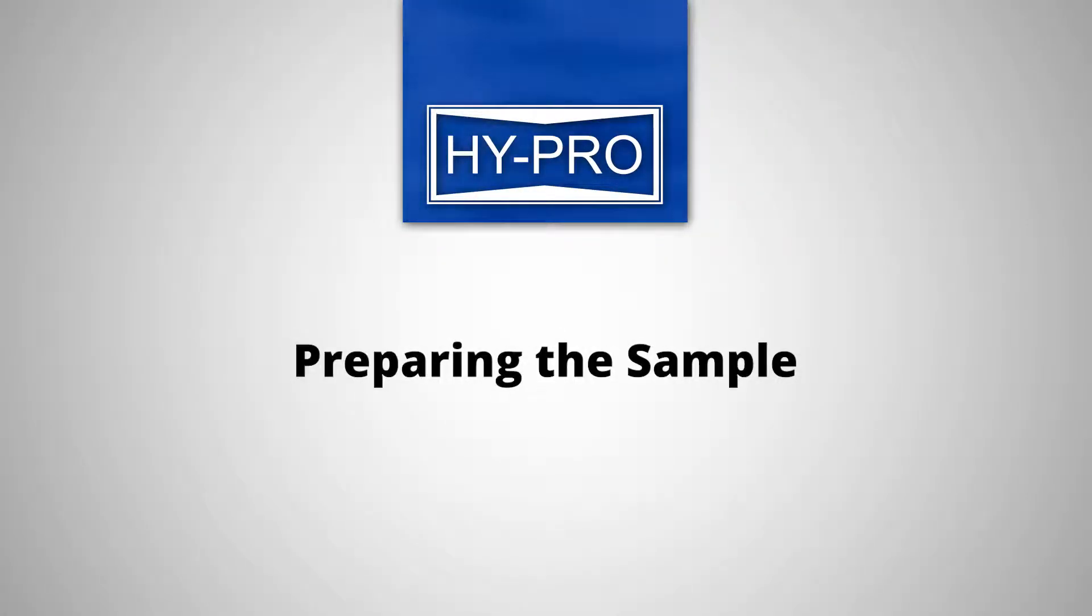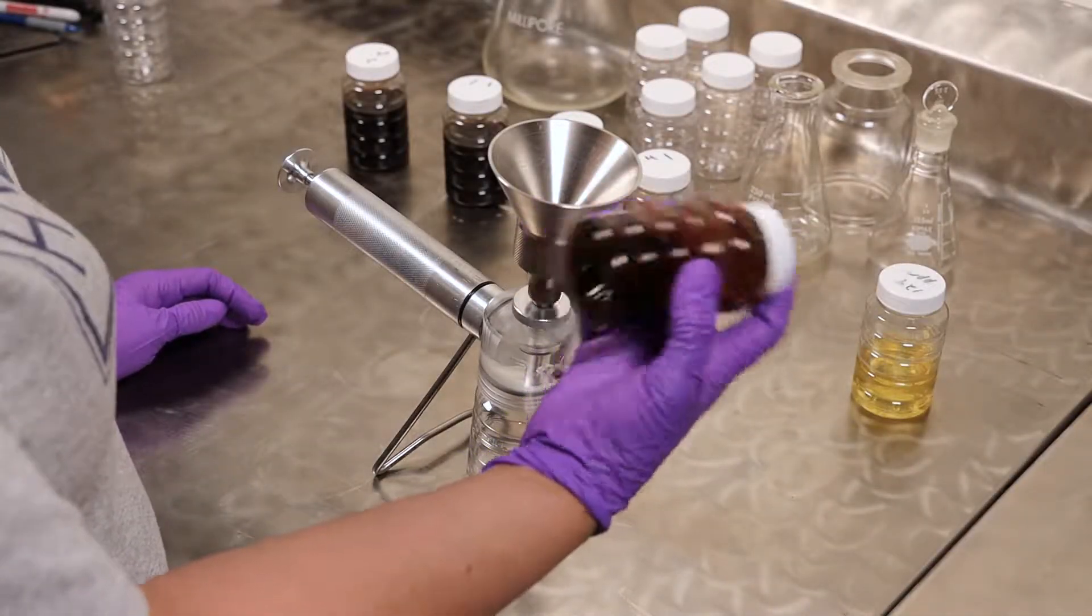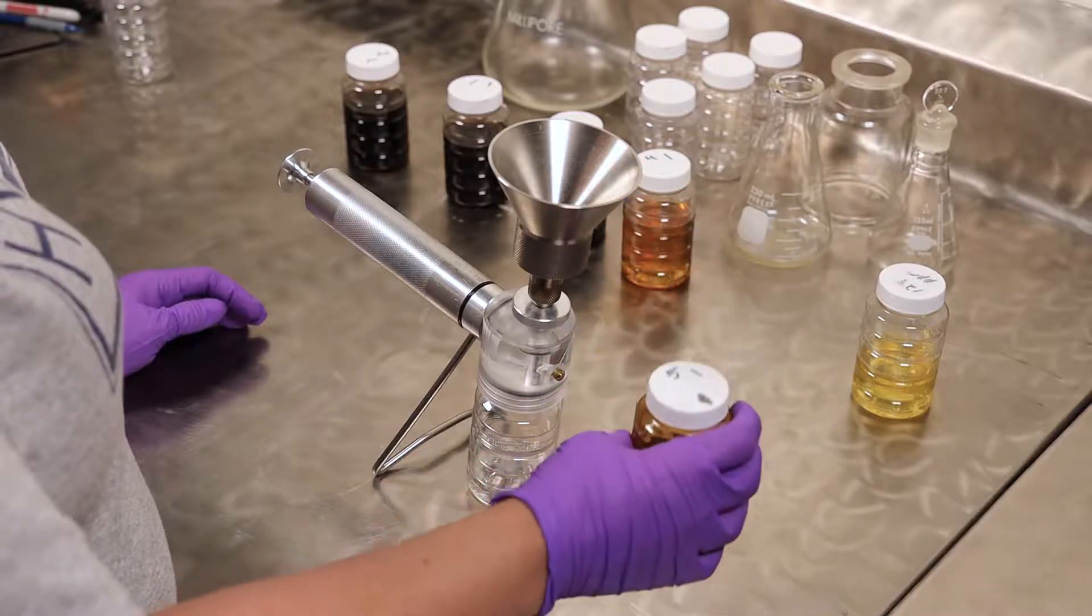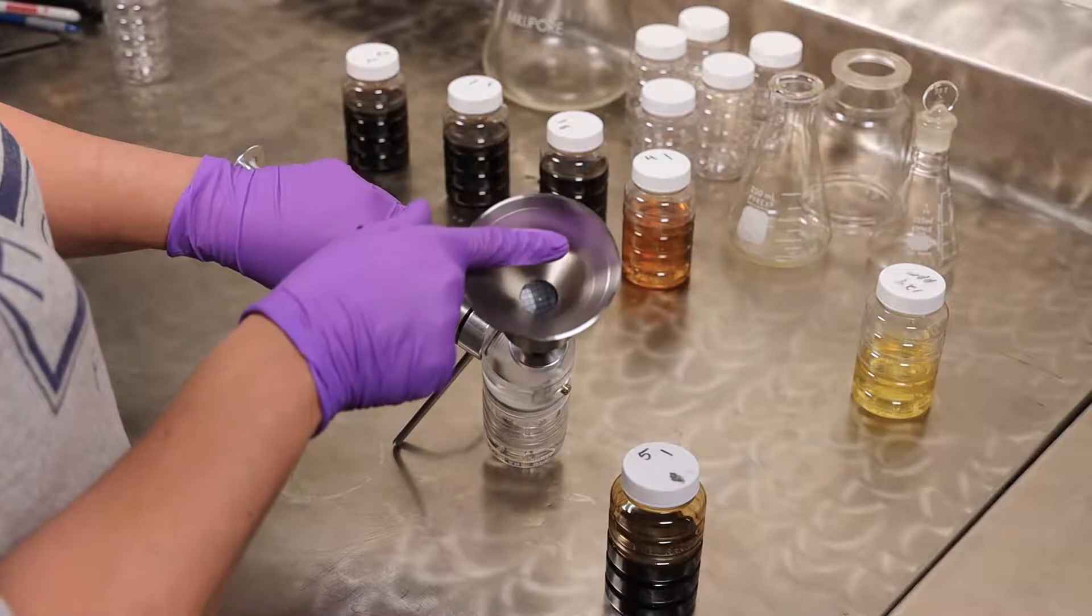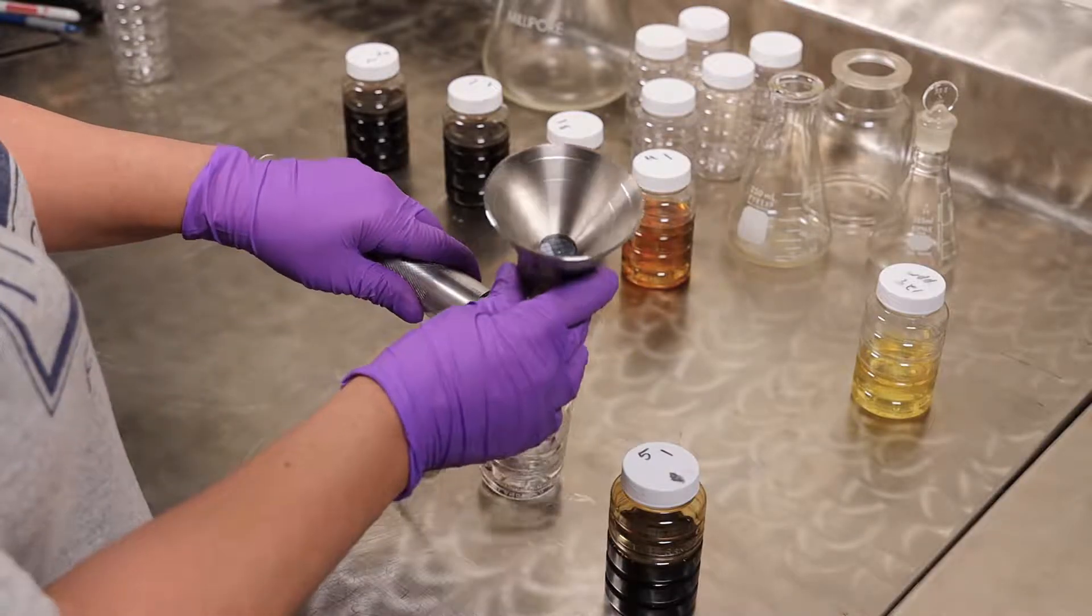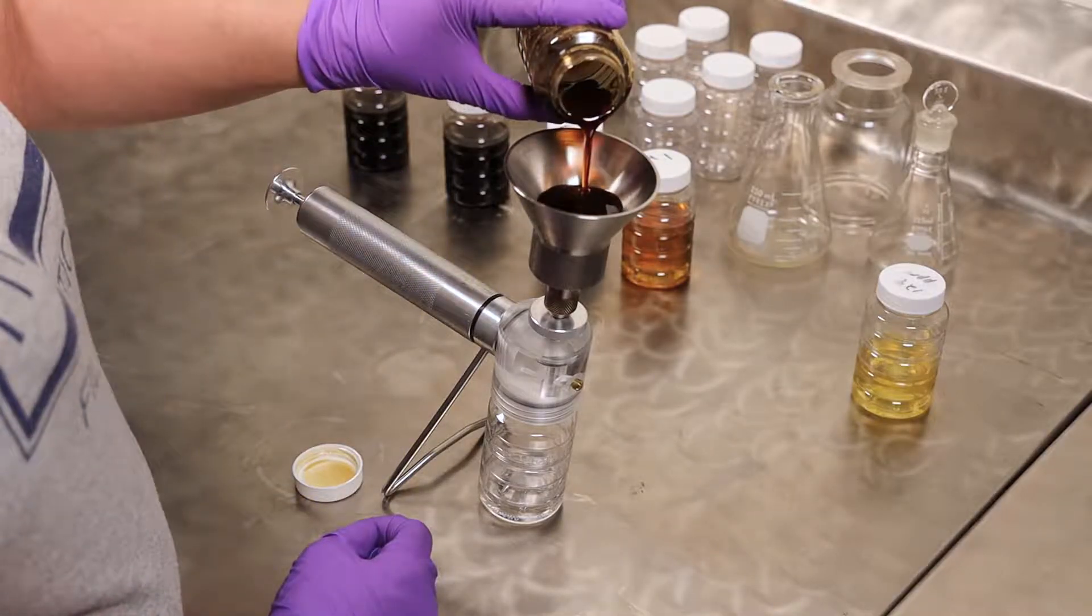Preparing the sample. Start by agitating the sample fluid bottle by vigorously shaking the sample fluid for approximately 15 seconds. After agitation, pour 25 milliliters of sample fluid or enough fluid to fill the sample funnel to the first line closest to the patch.